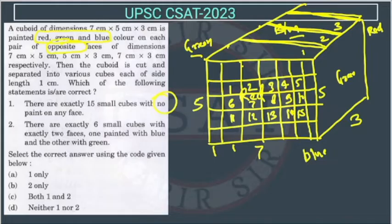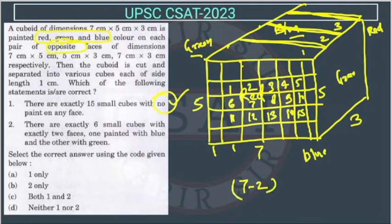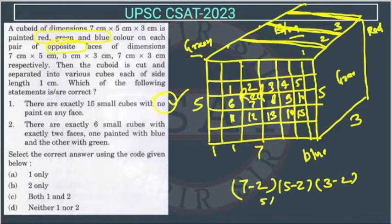I am talking about the middle layer — this layer is painted, but the middle layer interior is not. You can also use a formula: we remove 2 cubes from each side, so this will be (7−2) × (5−2) × (3−2) = 5 × 3 × 1 = 15. So the first statement is correct.